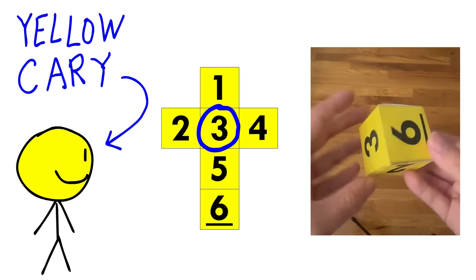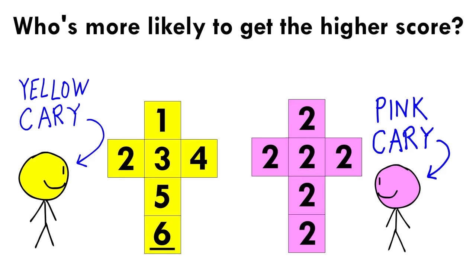Why? Well, suppose Yellow Kari rolls a normal six-sided die, with the sides having 1, 2, 3, 4, 5, and 6 on them. And Pink Kari rolls an altered six-sided die, with each side having a 2 on it. Who's more likely to get the higher score?